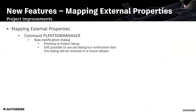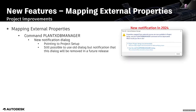Project improvements. The first one is about mapping external properties. You might already know the command PlantXDB Manager — this has changed a little bit more. If you type PlantXDB Manager in the command line, you will get a dialog. First, you will be asked to open the project setup as the recommended way. The second way is to use the old PlantXDB Manager dialog, but with the notification that this command will be removed in a future release.